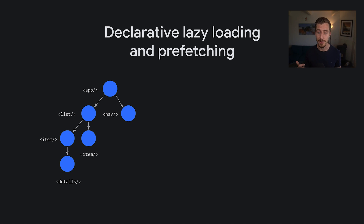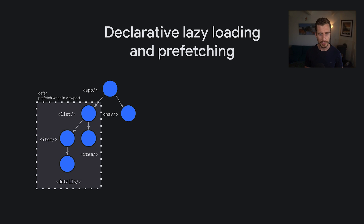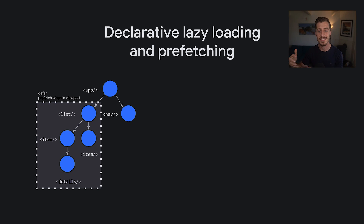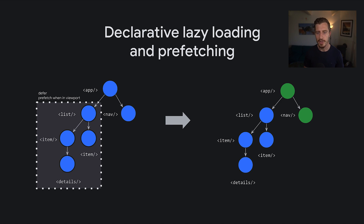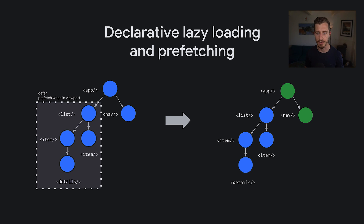Another feature I'm really excited about that we've been working on is called deferrable views. In deferrable views, you can specify what part of your template you'd like to lazily load. The framework is going to extract the segment of the template and all of its transitive dependencies as a separate JavaScript chunk, which will load lazily or be prefetched on a specific condition. In this example, we're only going to eagerly download and hydrate the components outside of the deferred block — in this case, the app component and the navigation component. Everything else will just be loaded later.